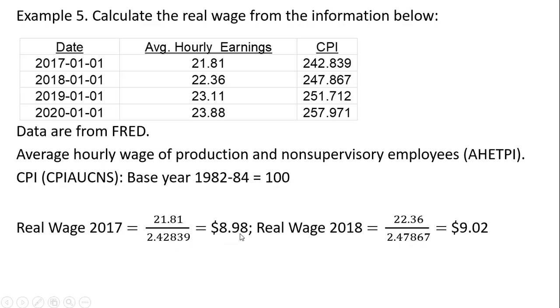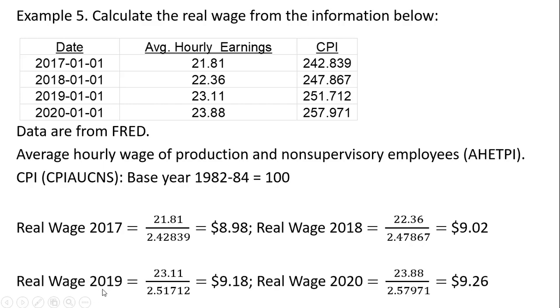The real wage in 2018: taking the nominal wage and dividing it by the price level, but first we have to adjust the price level by dividing this CPI by 100. Doing that, we get a real wage of $9.02. And then you can see the remaining calculations for 2019 and 2020.